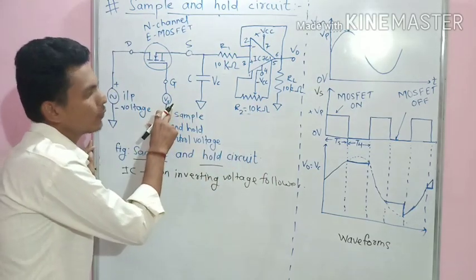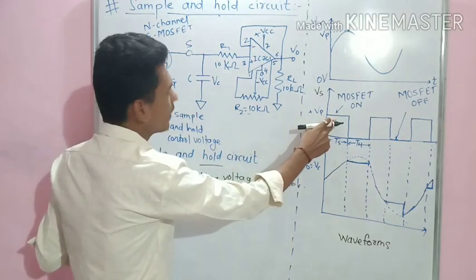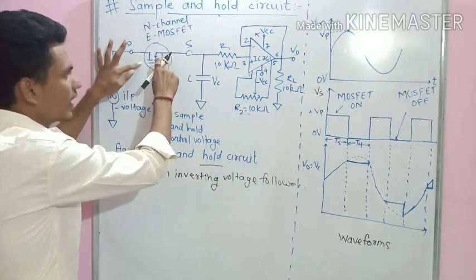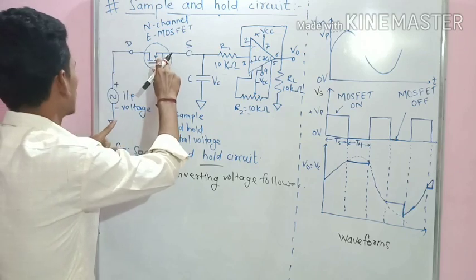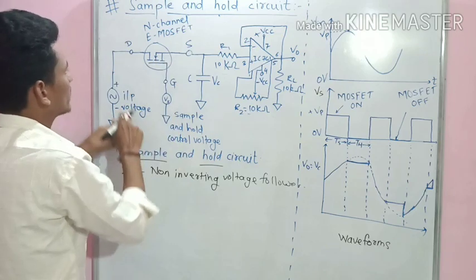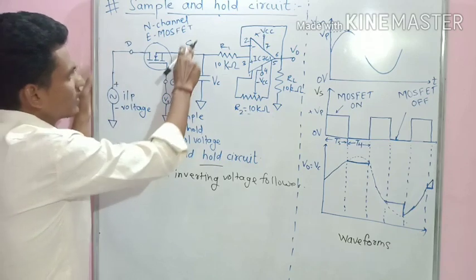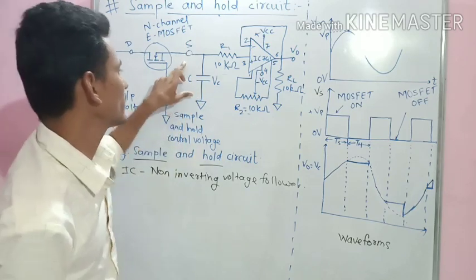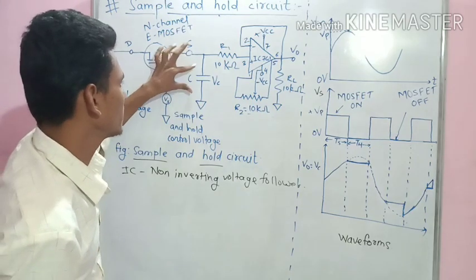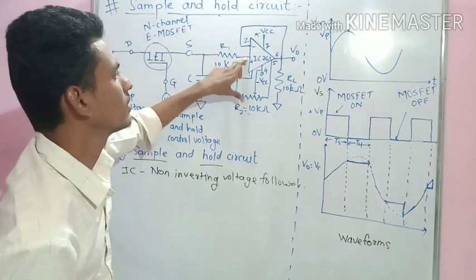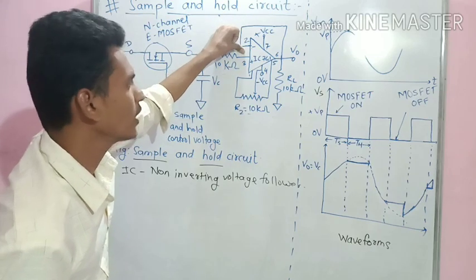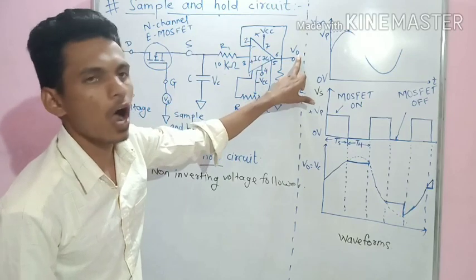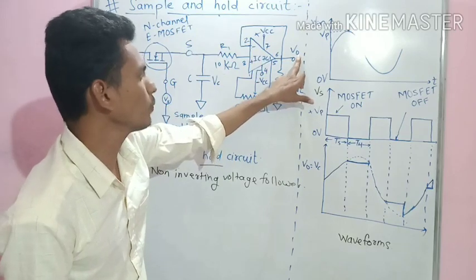If we apply a positive voltage at the gate terminal, the gate is at high and the switch is closed. If the switch is closed, whatever the input voltage is given to the drain comes over to the source, and that same voltage charges the capacitor.